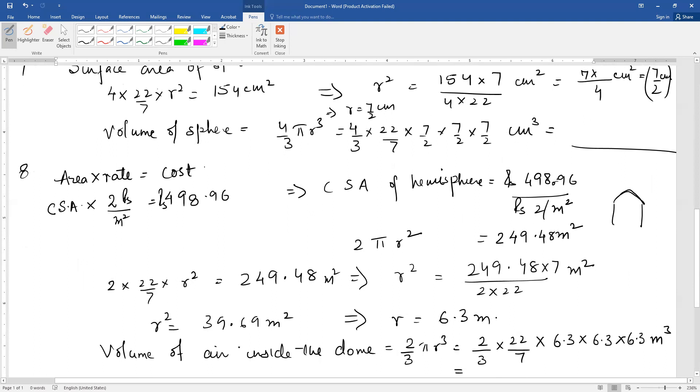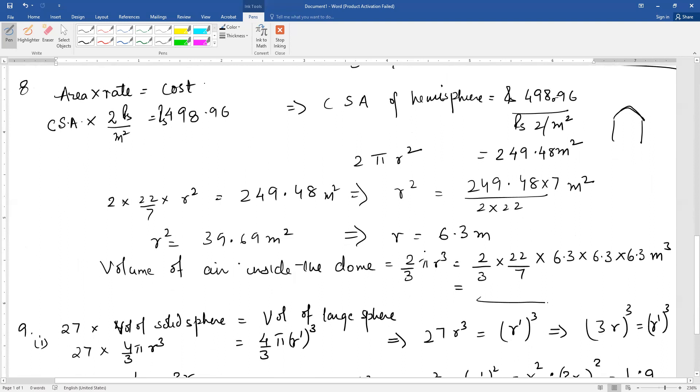Now what is the volume of air inside the dome? That is volume of a hemisphere 2/3 π r³. Substitute r value 6.3 meters and you can calculate the volume of the dome yourself.